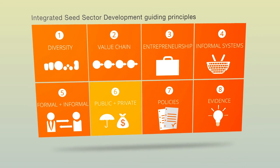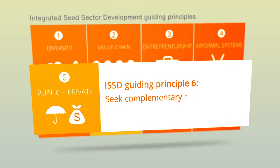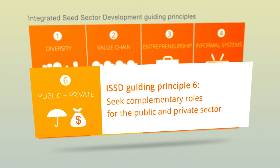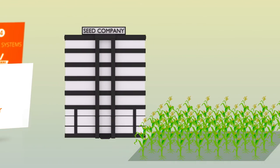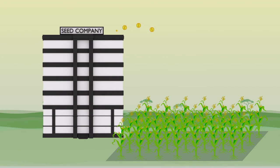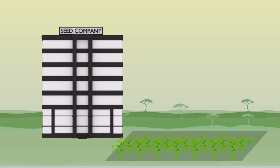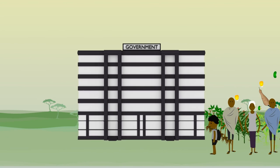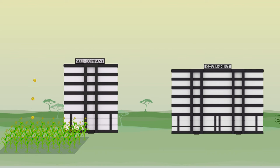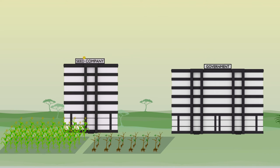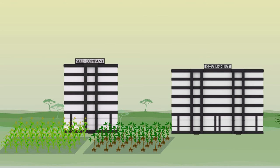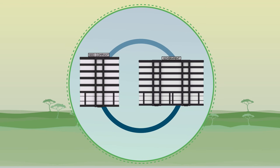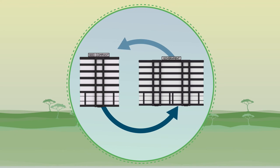ISSD Guiding Principle 6: Seek complementary roles for the public and private sector. Companies seek to make a healthy profit and are selective in the types of seed they offer. To serve the diverse demands of seed users, public funds need to complement the investments of the private seed sector, especially in areas where profits are hard to obtain. ISSD aims to facilitate cooperation between the public and private sector wherever possible.